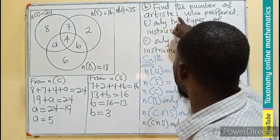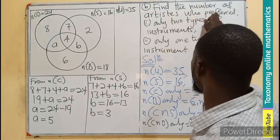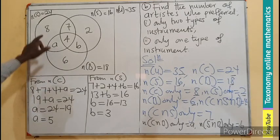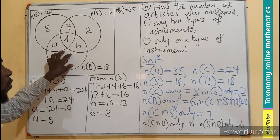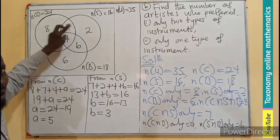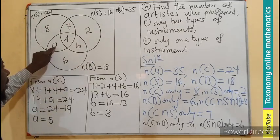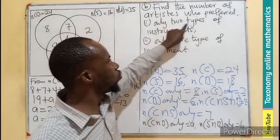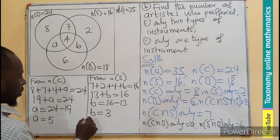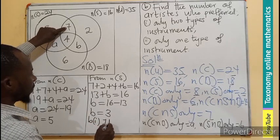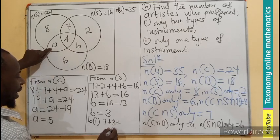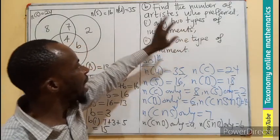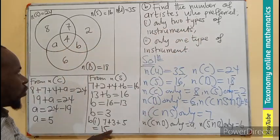Now we answer part b(i): find the number of artists who prefer only two types of instruments — the two-way intersections. These regions are cymbal ∩ saxophone only (7), cymbal ∩ bongo only (a = 5), and saxophone ∩ bongo only (b = 3). Adding them: 7 + 5 + 3 = 15. So 15 artists prefer only two types of instruments.